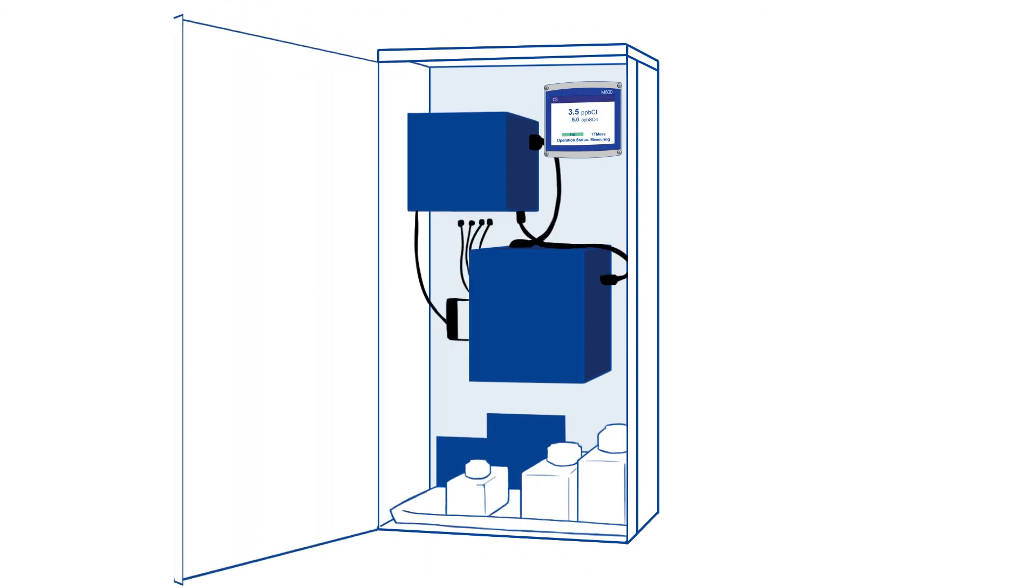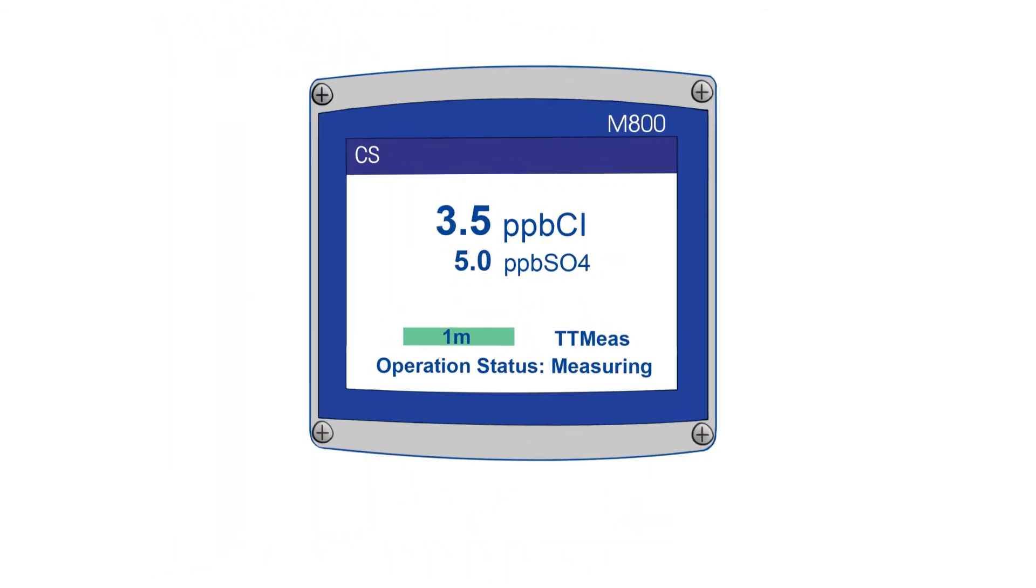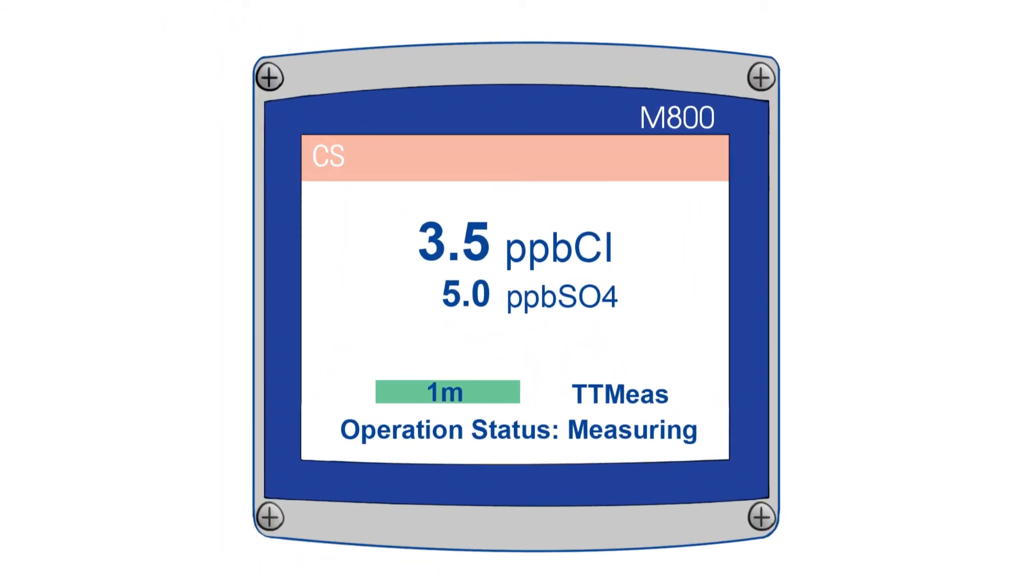The transmitter in the analyzer displays the concentrations and also provides alarms and outputs to make sure the user knows when something is wrong with their process.